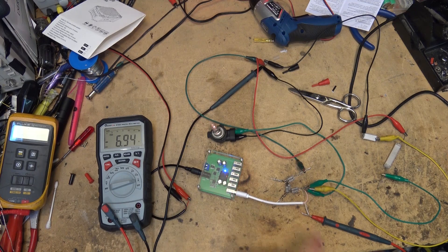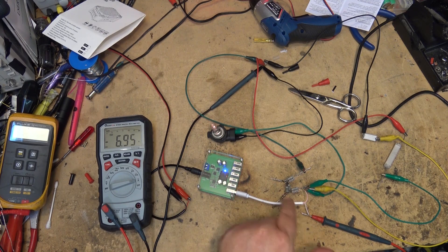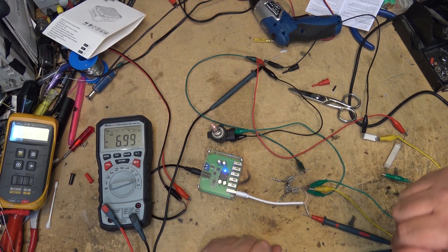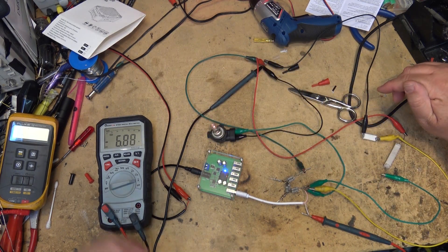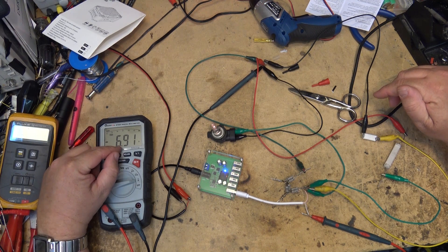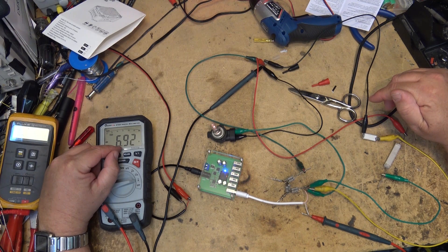So I got a 1.8 resistor, a 1-ohm resistor, a 1.8 resistor, and this light bulb here, and we're drawing—we're pushing it almost to 7 amps here.